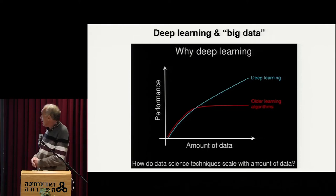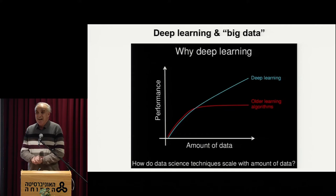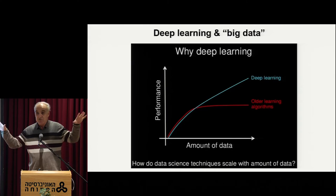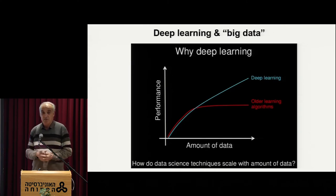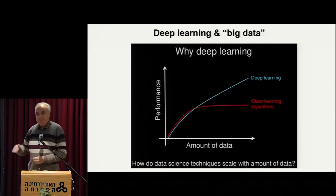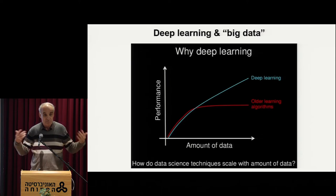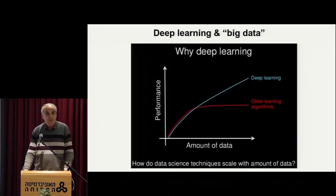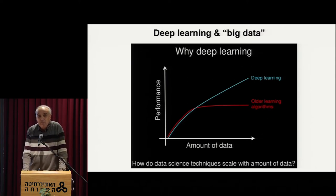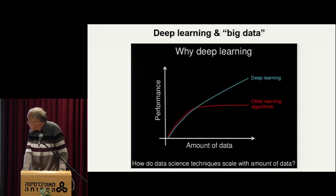One of the features of deep learning is that it seemed to improve with data in some strange way. Usually when you have a finite parameter class of functions — say polynomials of some finite degree — they eventually saturate; you don't get improvement in performance when you add more and more points. Deep neural networks seem to improve performance with data.